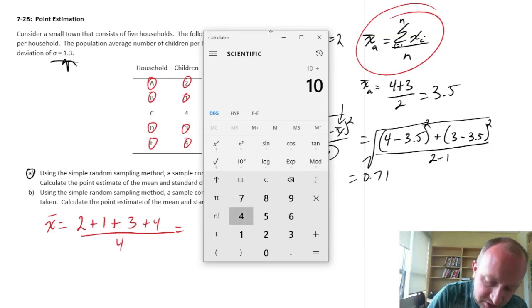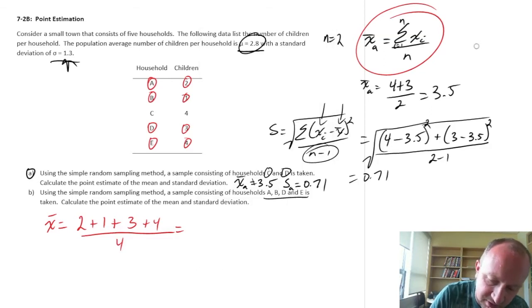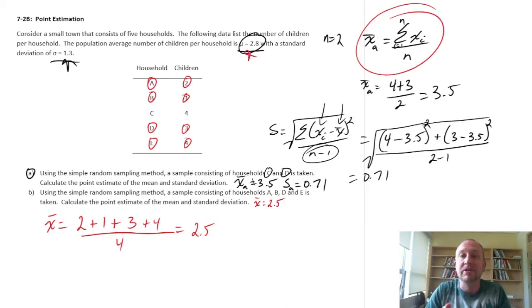Divided by 4, so I have an estimate of 2.5 and there's my point estimate of the mean, X bar is 2.5. So we're getting closer now. Of course I'm using four out of the five elements in this sample so as sample size grows, it looks like we're getting a lot more accurate with our estimates.